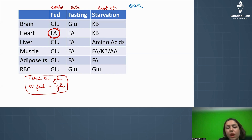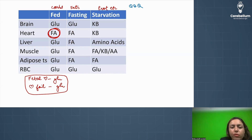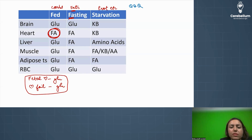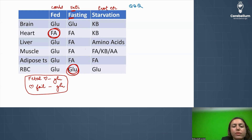Moving to the second column — fasting. An easy mnemonic: FA for fasting, FA for fats. So in fasting, most places show fatty acid as the fuel. But there are two exceptions in the fasting column — one exception in the fed column and two exceptions in the fasting column.